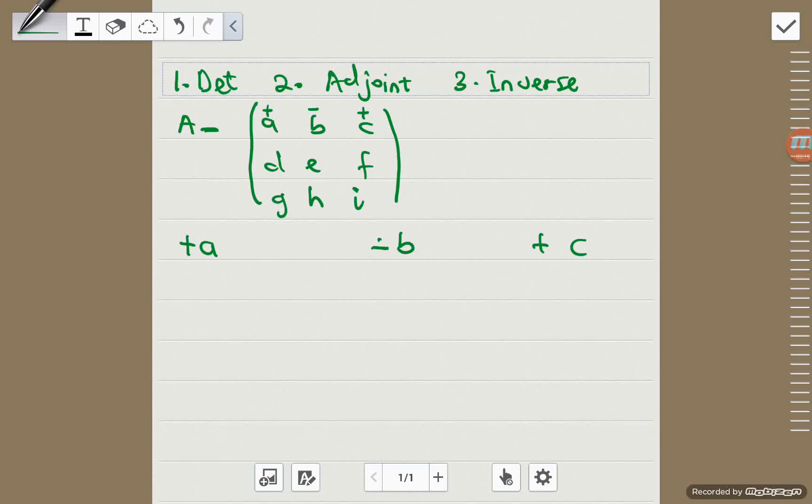So we locate the first component, which is A, then we cross out the row and the column in which that component can be found. Then find the determinant of the remaining minor matrix, which is E, F, H, I.